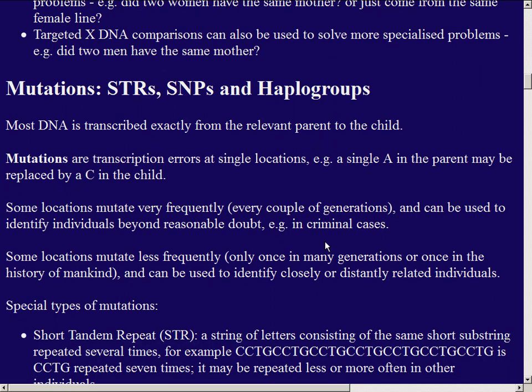In theory about 98.5% of our DNA is identical, and we're looking at the tiny part — about 1.5% — that varies from one individual to another. Most of our DNA is transcribed exactly from parent to child, but sometimes — just as in any transcription project — a transcription error occurs: one letter is different in the child from what it was in the parent. That's what we call a mutation. Most are harmless, but some cause diseases. In Ireland we have genetic diseases like cystic fibrosis and hemochromatosis that are more common than anywhere else in the world, resulting from mutations that happened many hundreds or thousands of years ago.